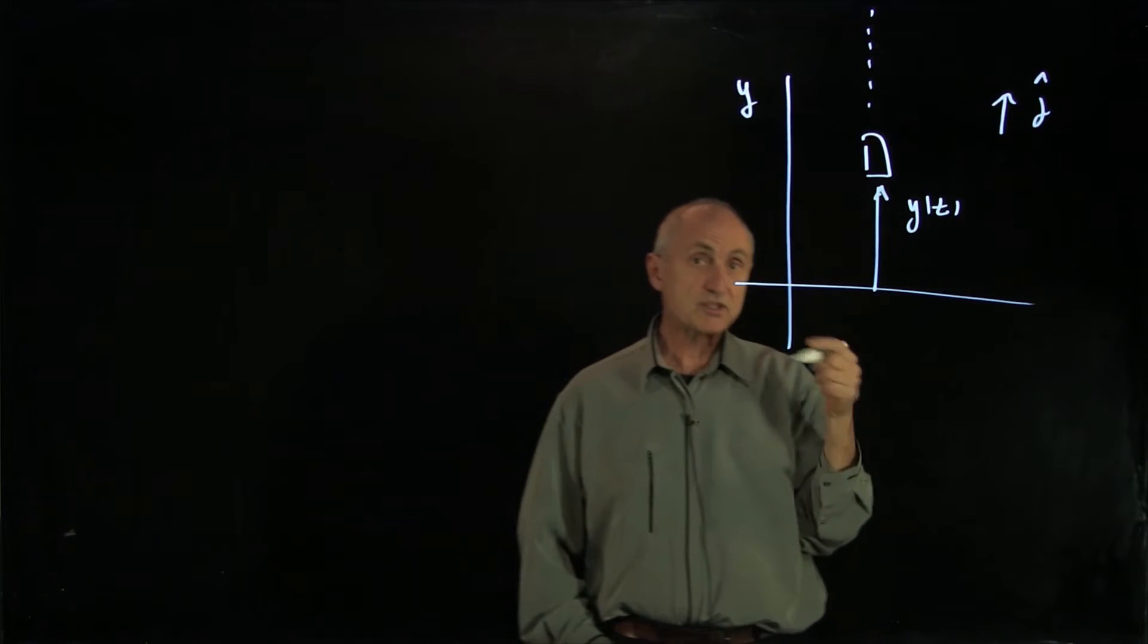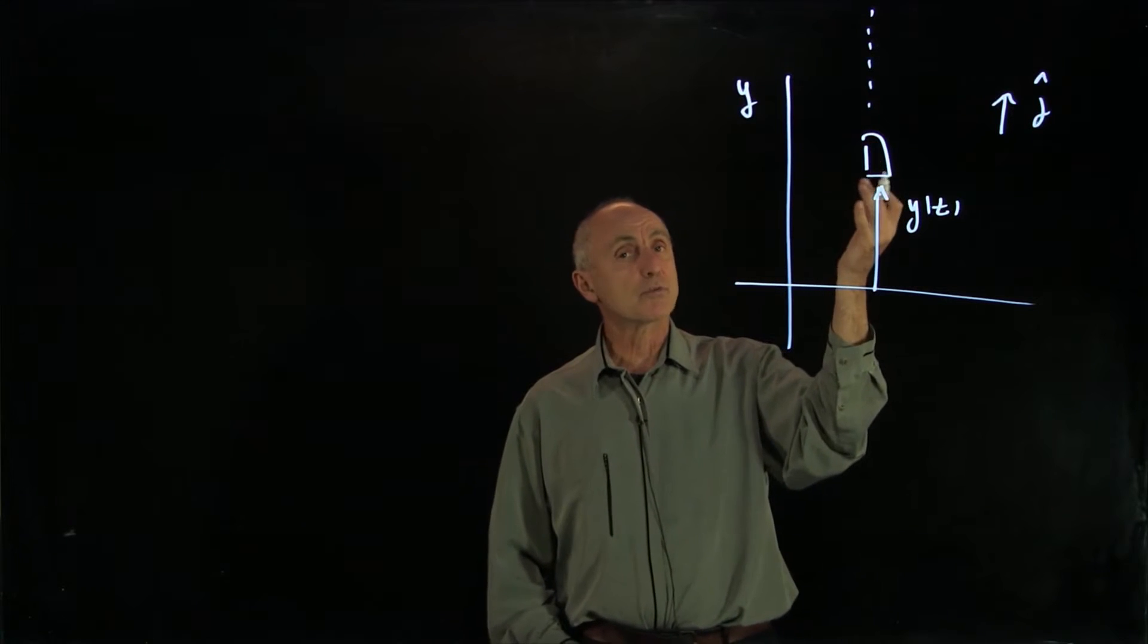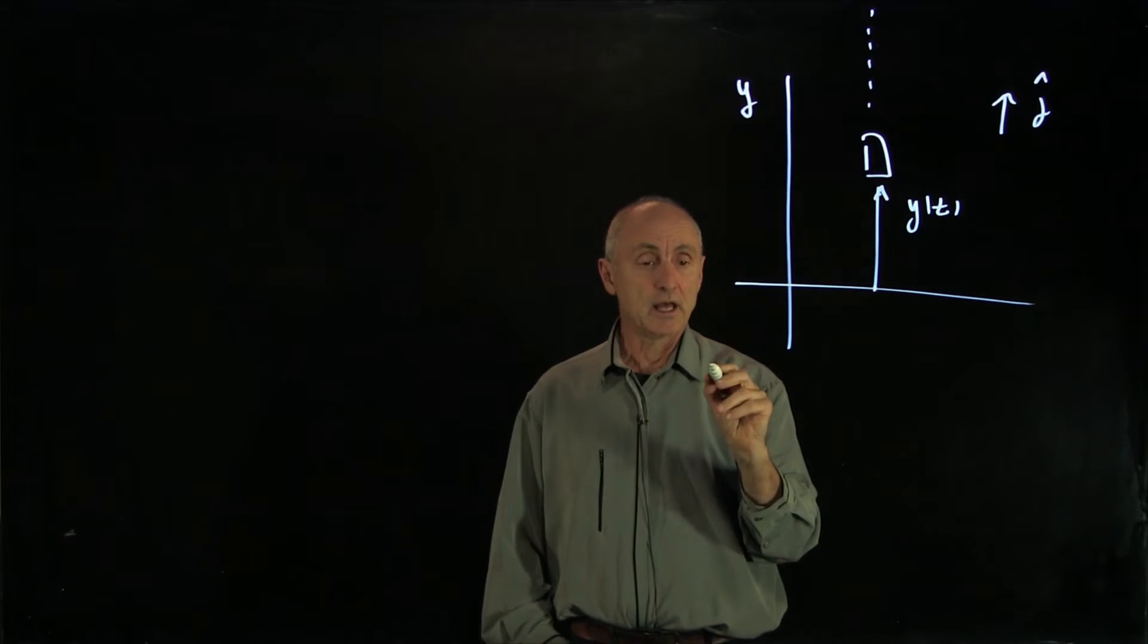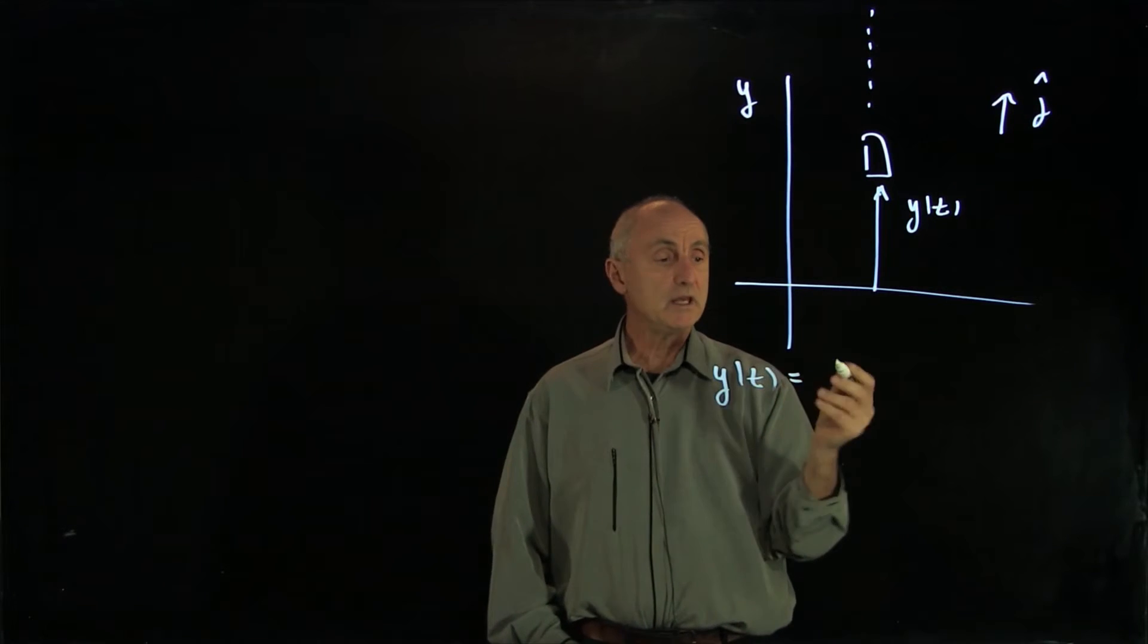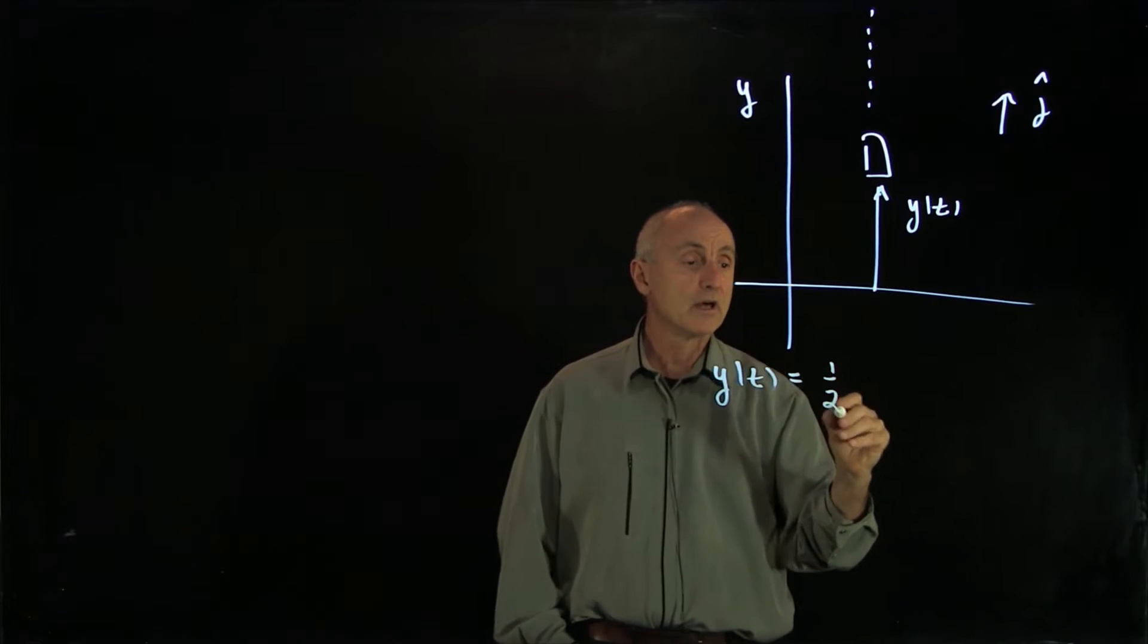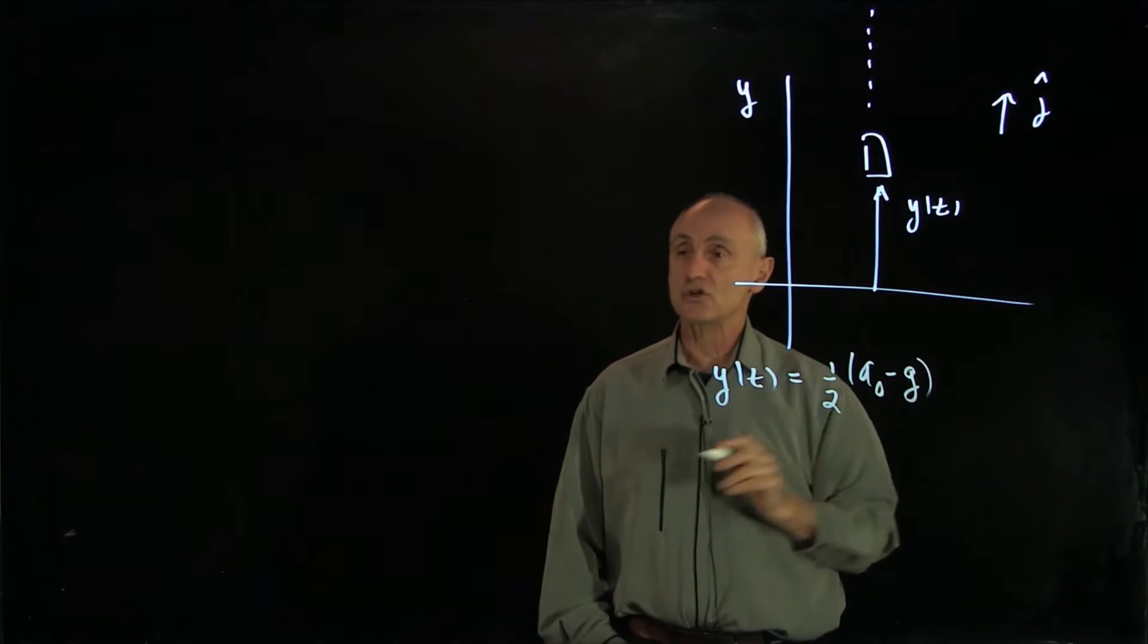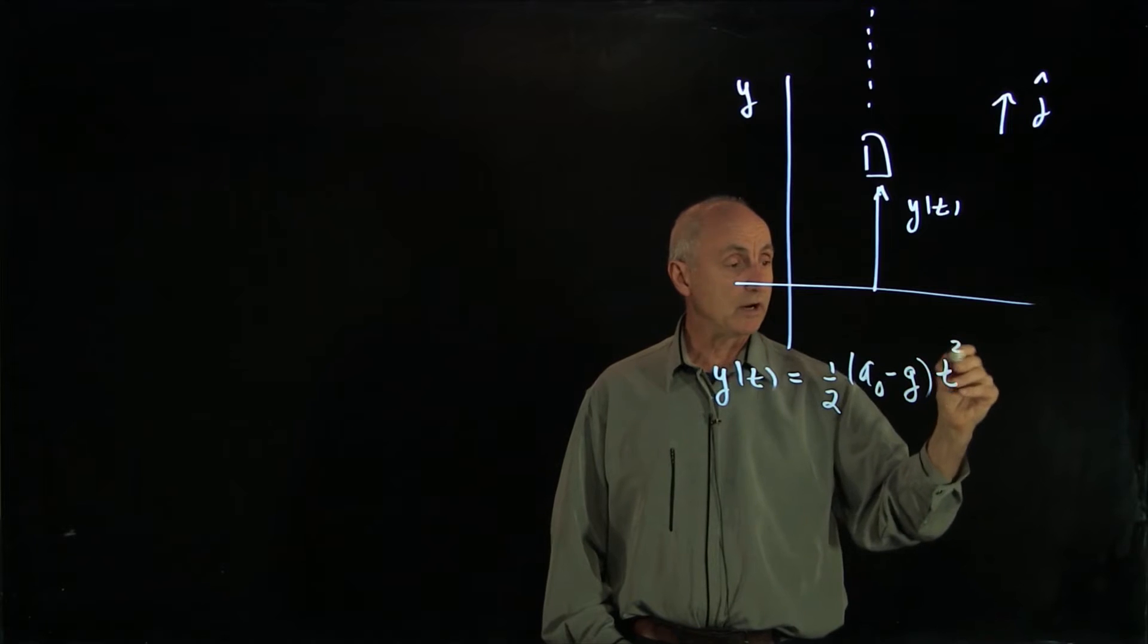While the rocket is thrusting upwards and the engine is burning, we can describe a function y(t) to be equal to 1/2 times (a0 minus the gravitational acceleration g) times t squared.